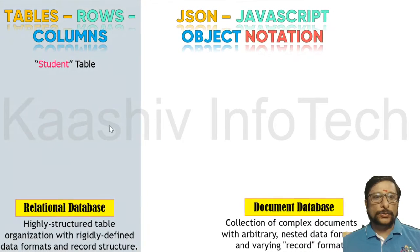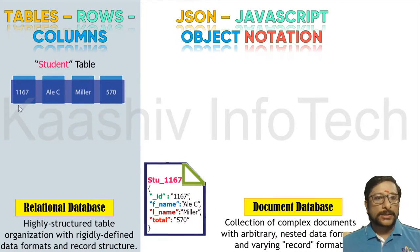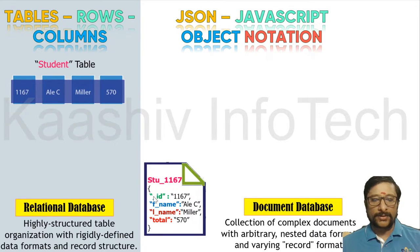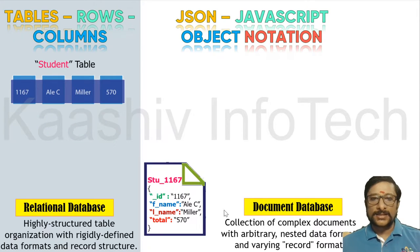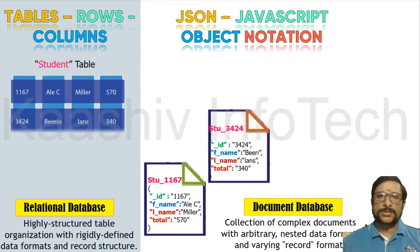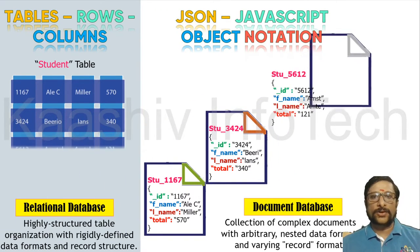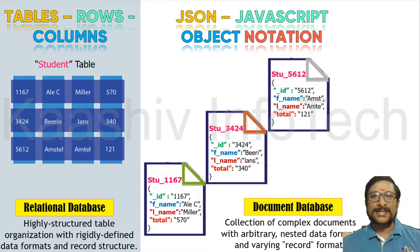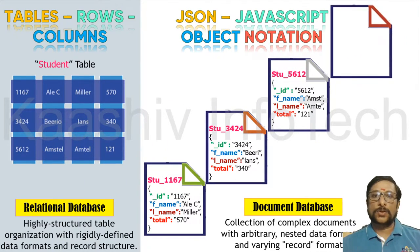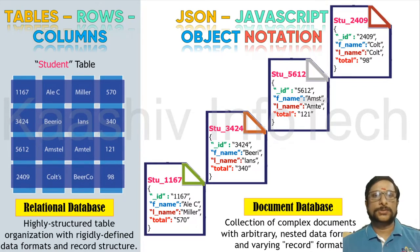Over here, as I told you, you got the relational table — a student table with one row. This one row is represented like this: you got the ID, the first name, the last name, the total. This is one record, and that is why it is considered as a document. The row is considered as a document here. Every row is converted into a single document in JSON — JavaScript Object Notation.